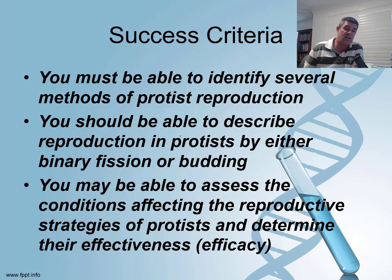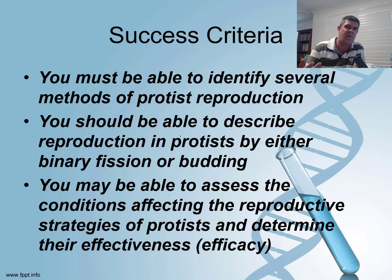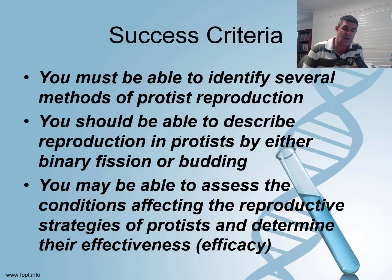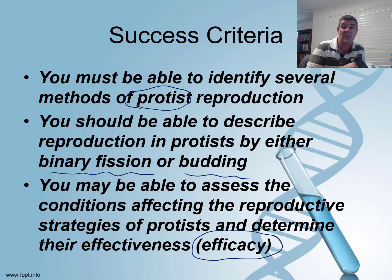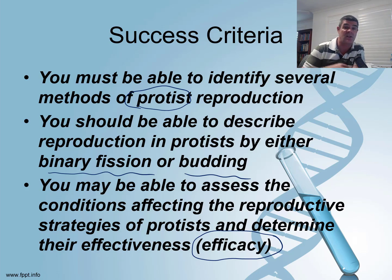I hope as you've been going through these videos that you realise there's a limited number of different types of strategies. Obviously, there's a huge range of different organisms, but a limited number of strategies. Once we've got a handle on the way different organisms reproduce, it's looking at the specifics about the differences. We're looking at protist reproduction, binary fission and budding, and trying to determine efficacy — how successful has this group been with these strategies, and why these strategies rather than more sexual reproduction?